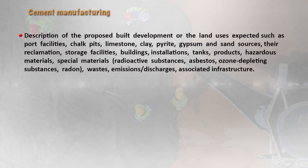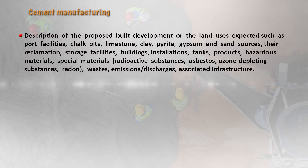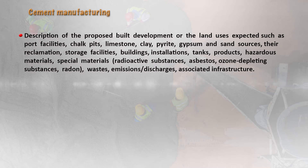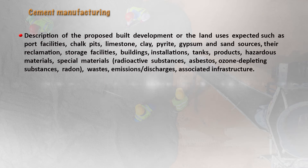A description of the proposed built development or land use should cover port facilities, chalk pits, limestone, clay, pyrite, gypsum, and sand sources and their reclamation. Storage facilities for raw material, products and waste, buildings, installations from kilns, mills, grinders, separators, heat exchangers, and stacks need to be described. Underground and above-ground tanks, and other hazardous or special materials such as radioactive substances, asbestos, ozone depleting compounds, radon, and other waste emissions must also be included.